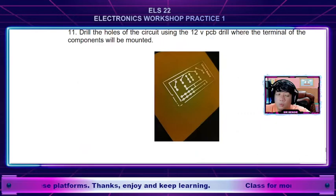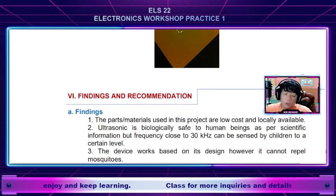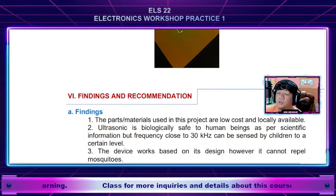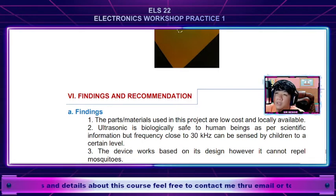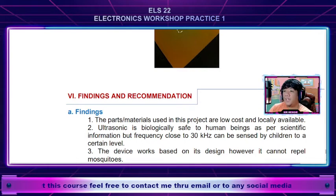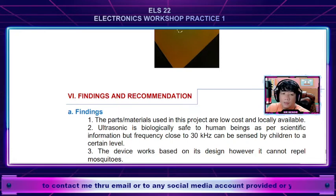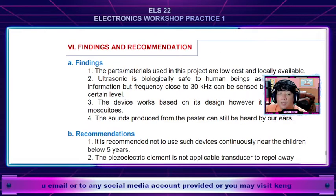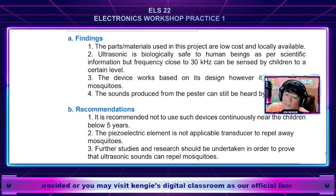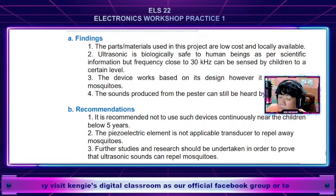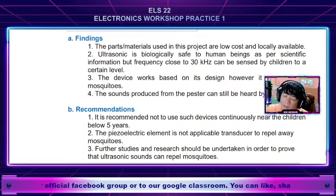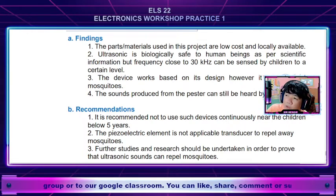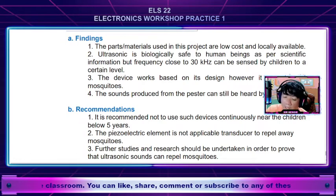The last part pertains to findings and recommendations. After you design, lay out, place the components on the PCB, and test if it functions, kindly tell us your observations and experiences in building the project. For example, the findings based on this sample state that the parts and materials used for the electronic mosquito pester are low cost and locally available. But what happens if your device didn't work? In a workshop practice class, there are instances where our project doesn't work — you can reflect on that in the technical report, stating the possible reasons why it didn't function.